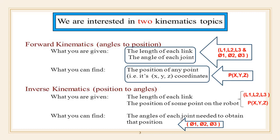Forward and inverse kinematics are the methods to calculate coordinates of end effectors and joint angles respectively. The position of the end of the arm may be represented in a number of ways; one way is to use two joint angles theta1 and theta2. In forward kinematics, the given parameters are L1, L2, L3 and theta1, theta2, theta3; you find out the Cartesian coordinates X, Y, Z of the end effector. In inverse kinematics — also called reverse kinematics — the given parameters include L1, L2, L3 and Cartesian coordinates P(X, Y, Z); you find out the joint angles.